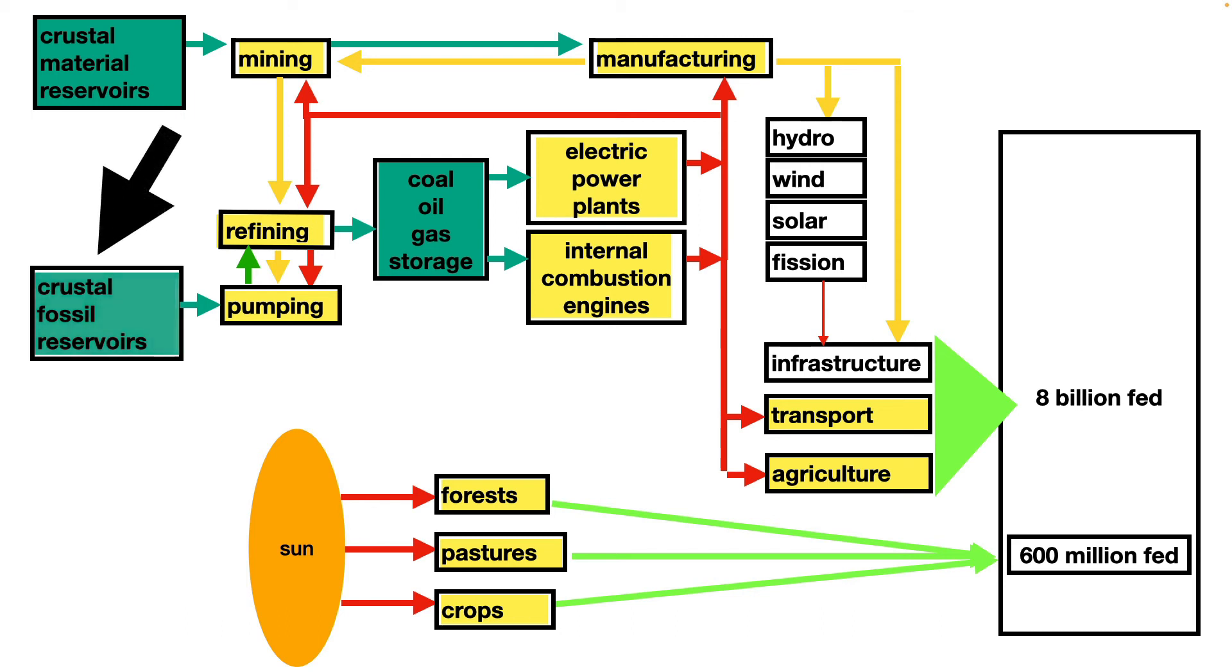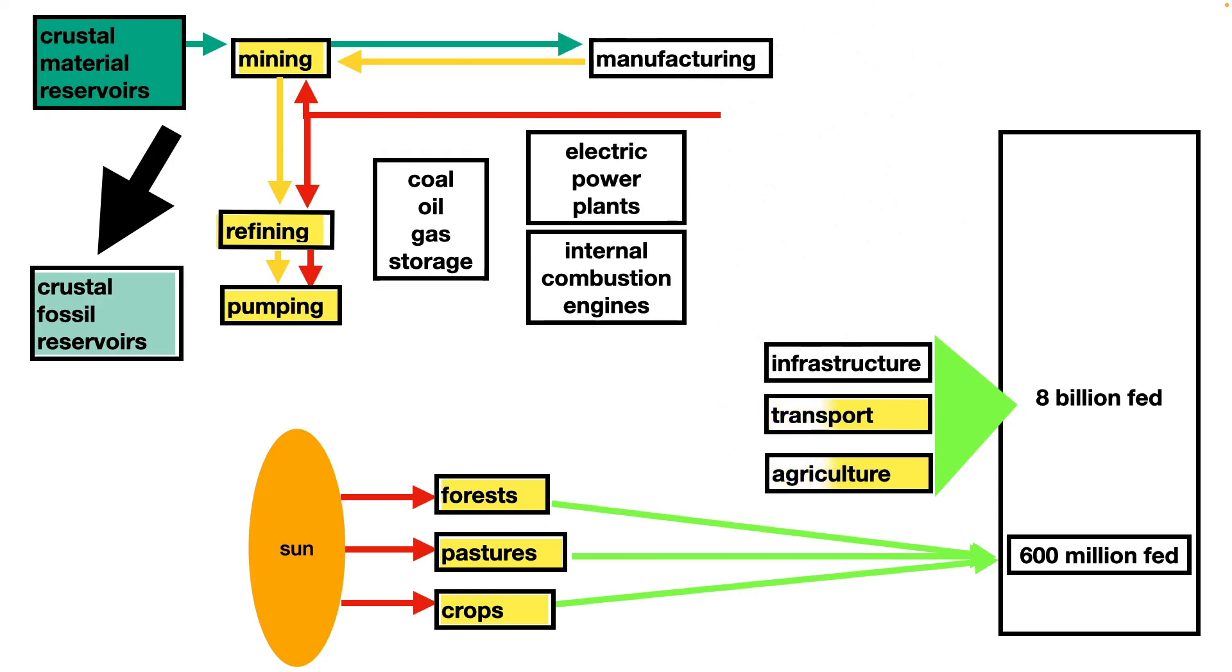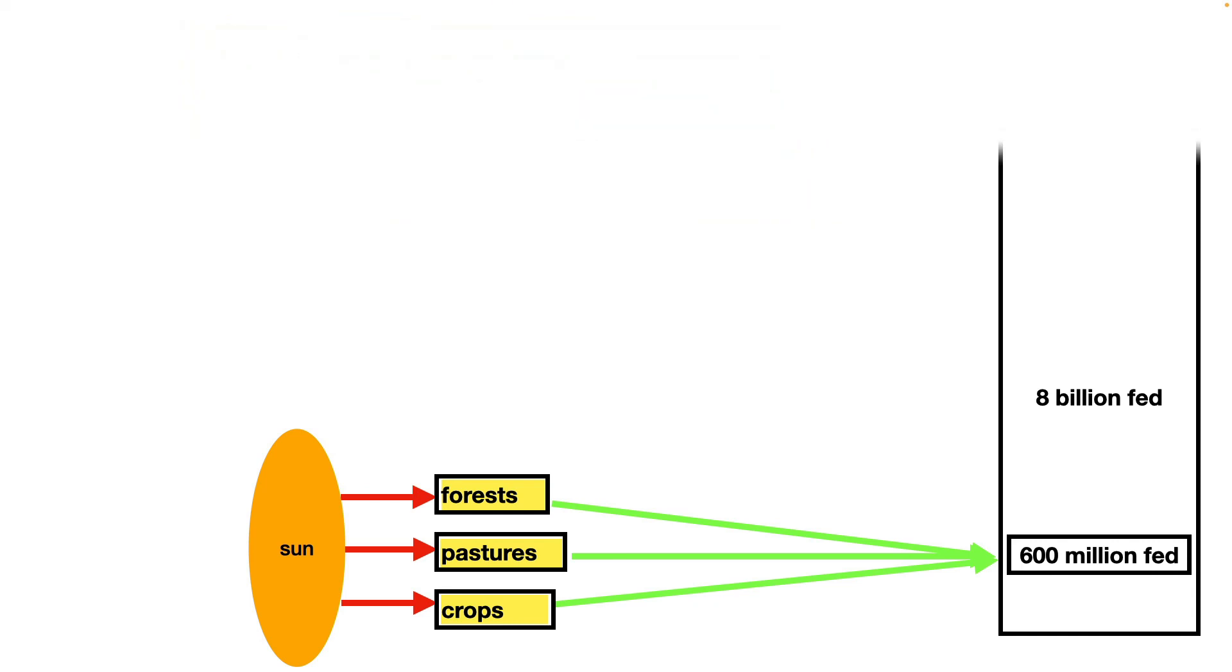The whole system keeps flowing until reservoirs become too dilute. Then pumping and refining struggle. Fuel storage empties. Power plants stop. Internal combustion engines stop. Manufacturing stops. Hydro, solar, and wind machines wear out. Energy capture stops. Energy to agriculture stops. And food deliveries stop.